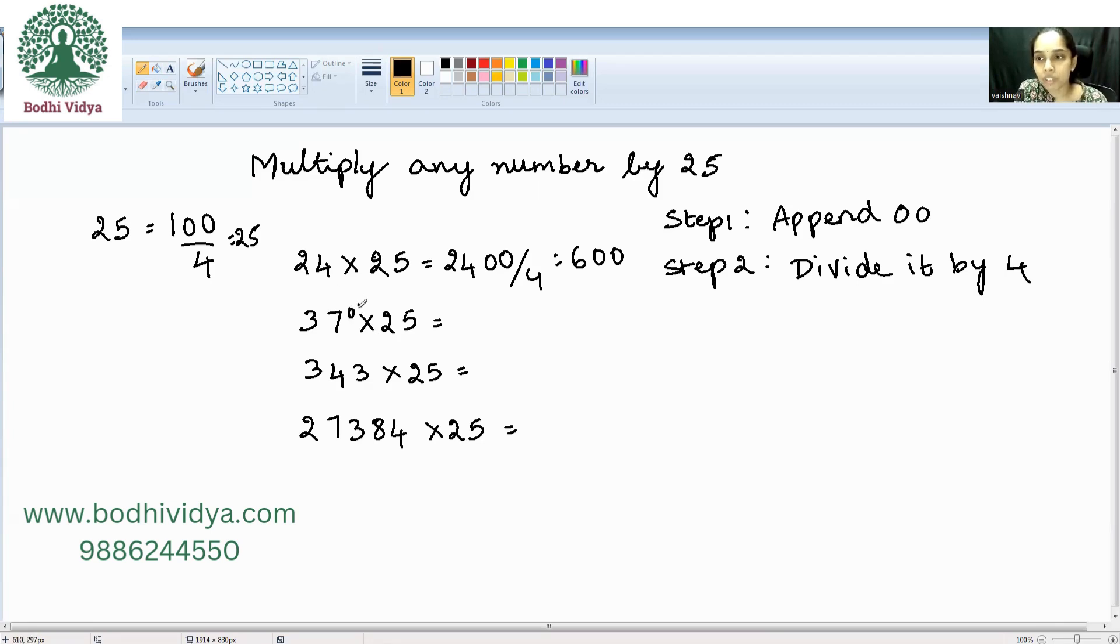So it is 3700 divided by 4. So 9 fours are 36, 1 carry. 2 fours are 8, and 5 fours are 20. So the answer is 925.